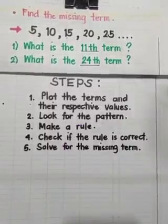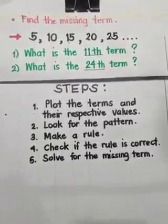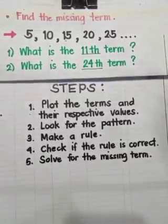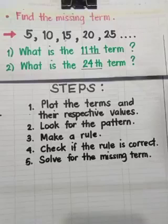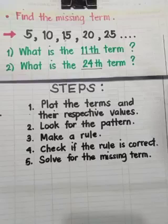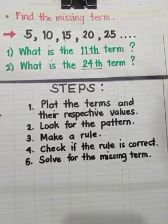Just remember the steps in solving or finding the missing term. First, we have to plot the terms and their respective values using a table. Number two, you're going to look for the pattern. Number three, make a rule based on the pattern. Then, you check if the rule is correct and if it is applicable to each of the terms in your sequence. And lastly, if the rule is correct, you're going to solve for the missing term.